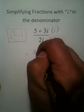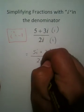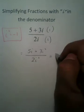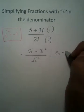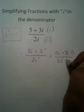So, you have 5i plus 3i squared and then you have 2i squared. Now, this will simplify down to 5i plus 3 times negative 1 and 2 times negative 1,